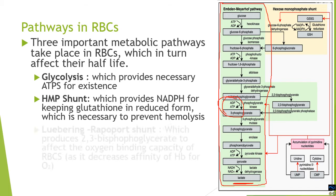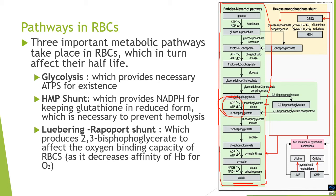The third pathway is the Luebering-Rapoport shunt, which produces 2,3-bisphosphoglycerate. 2,3-BPG affects the oxygen binding capacity of the RBCs; it decreases the affinity of hemoglobin for oxygen, enabling RBCs to deliver oxygen more readily to the tissues.